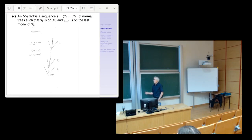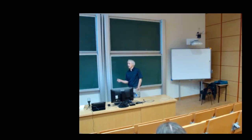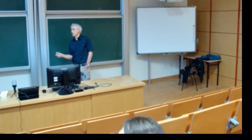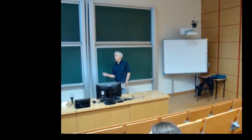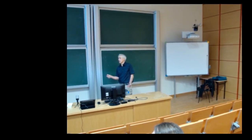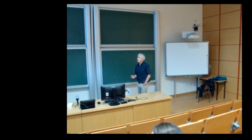A normal tree requires extenders to increase in length, but you really want to consider stacks of normal trees. So you do a normal tree, go to the end model of that first normal tree T0, and then do another normal tree — abandoning the length-increasing requirement. You don't have to respect the lengths of the extenders in T0 and can go back to shorter extenders. So there's this picture of a stack of normal trees.